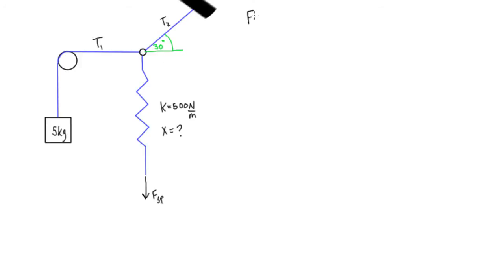So, let's start with the free body diagram. Okay, so we're going to have, same as usual, we have one tension pulling this way, we have our other tension pulling up at 30 degrees, and we're going to have the force of the spring pulling down, and we can say that this here is 30 degrees.